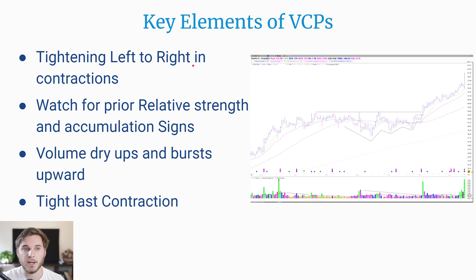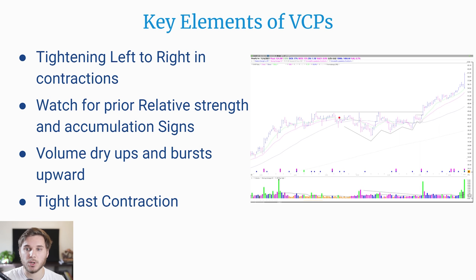Let's talk about the key elements of VCPs. Basically, you want to see tightening from left to right within the base, and you want to see multiple contractions — at least two. Here's an example with Shopify back in 2017, where you've got three main contractions and one small one at the very end, then a surge up in price and volume leading to a really strong uptrend. You also want to watch for relative strength and accumulation signs before the price base, and within the overall pricing structure.